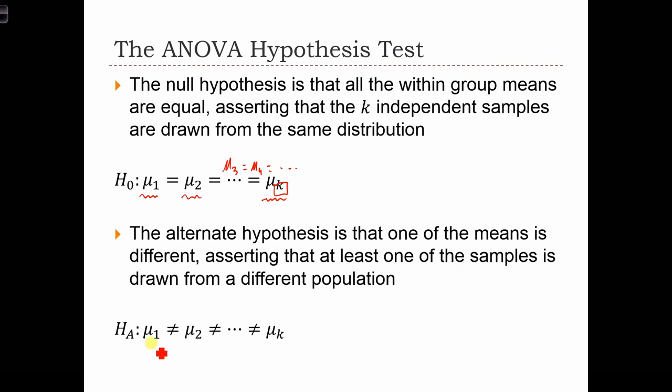So in this case, we just have μ₁ not equal to μ₂ not equal to each μ that we have until we exhaust the number of groups that we have. So in our case, it would just be μ₁ not equal to μ₂ not equal to μ₃.